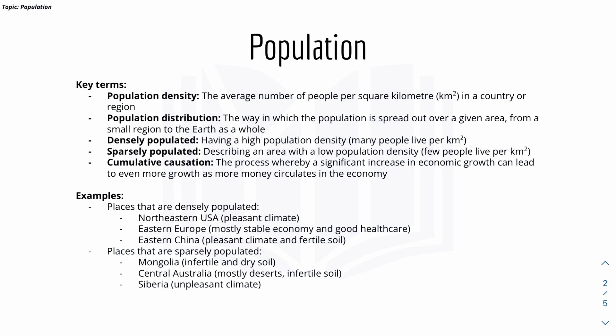Starting with population, here are quite a lot of key terms for you to know. Population density is the average number of people per square kilometer. Distribution means how the population spreads around in a country or area. Densely populated means having a high population density — many people live per square kilometer. Sparsely populated means there is a lower population density. These two are not to be confused with overpopulation or underpopulation.